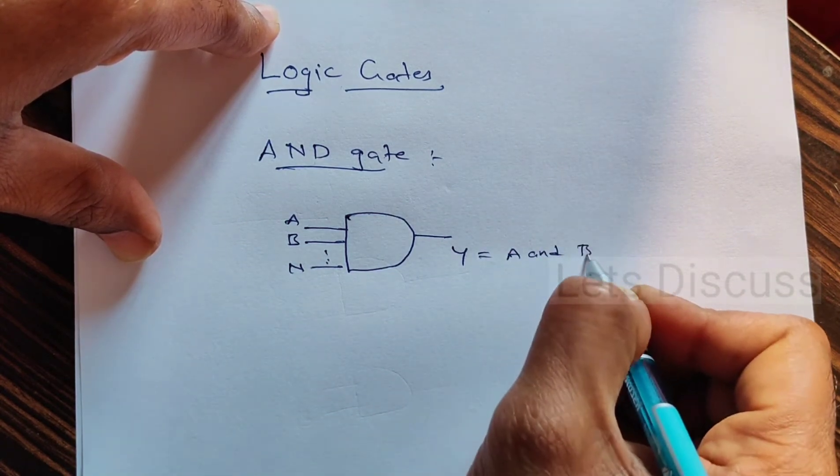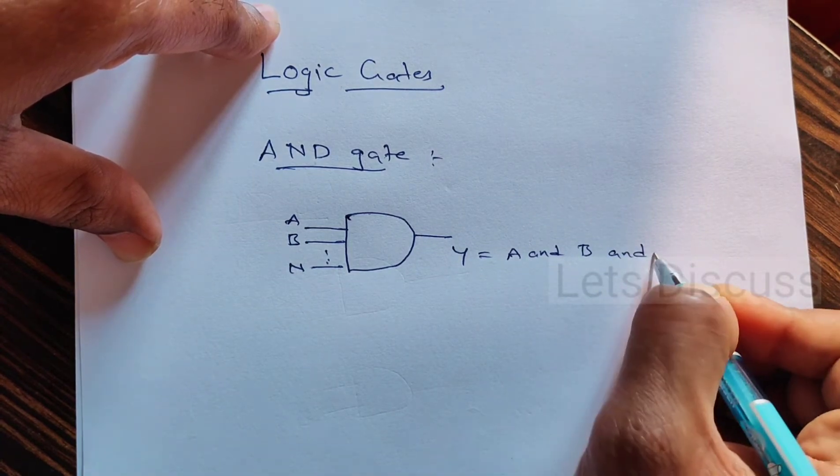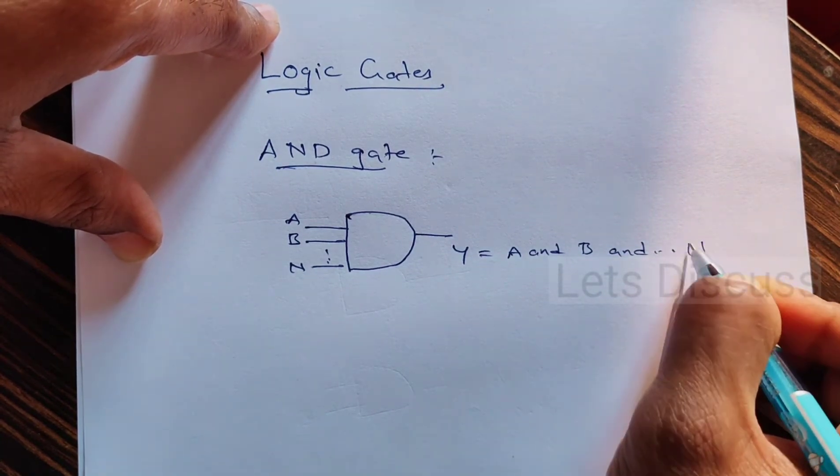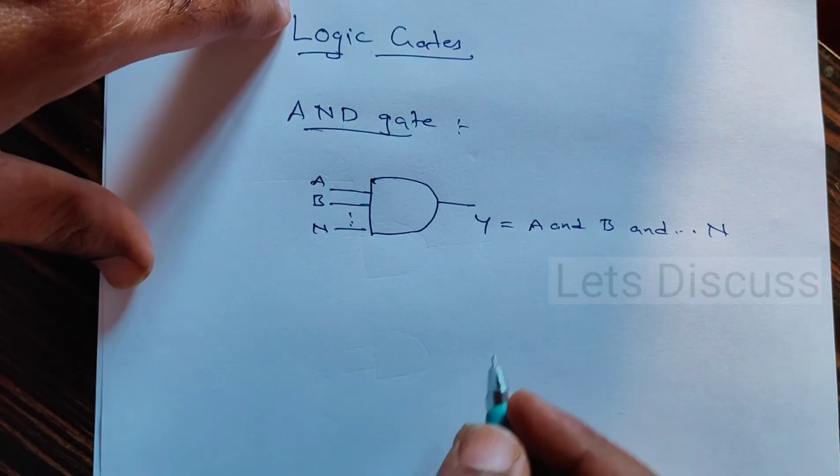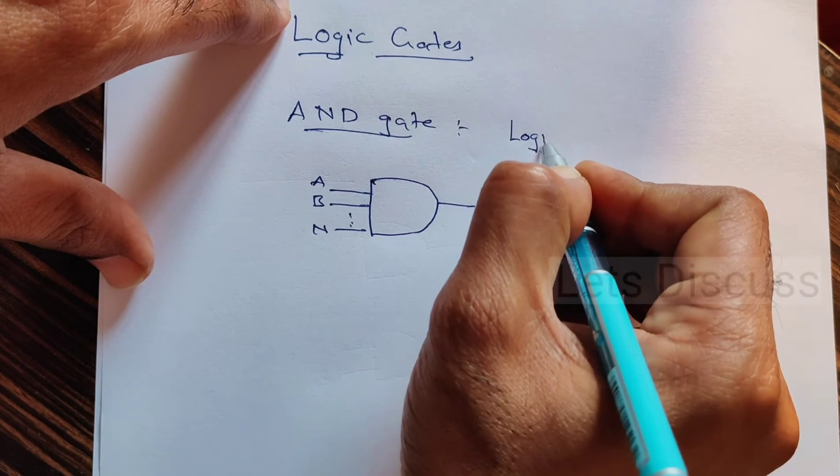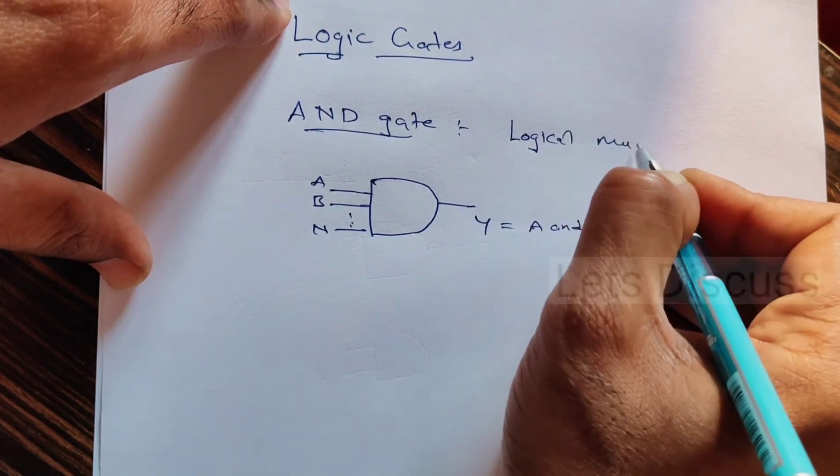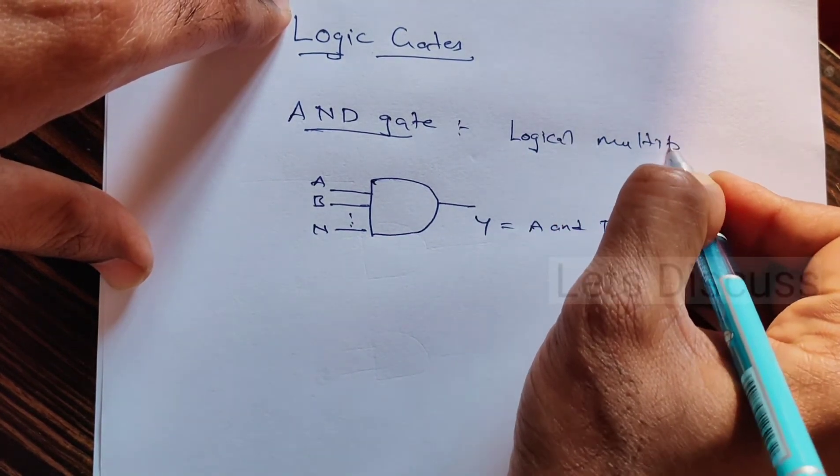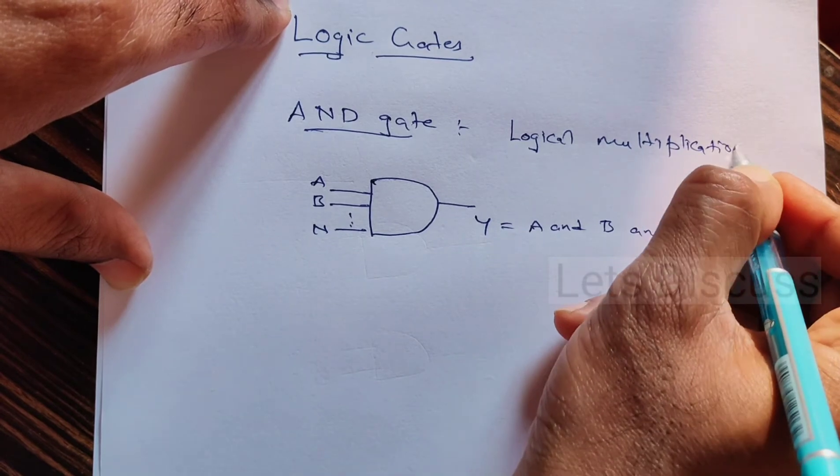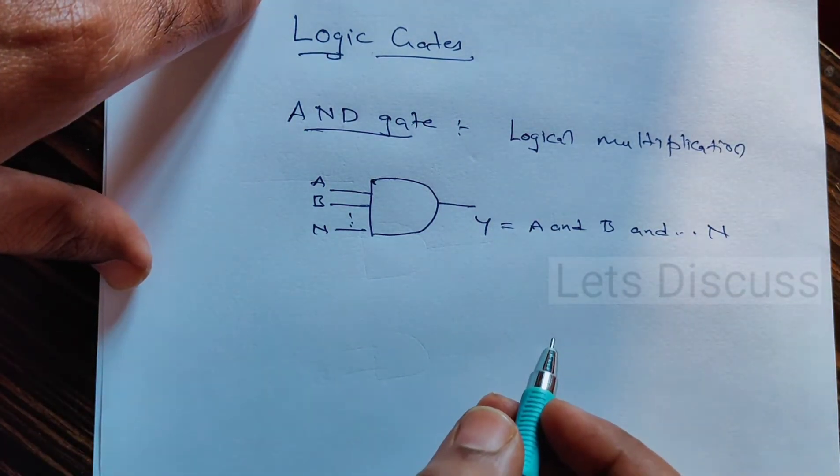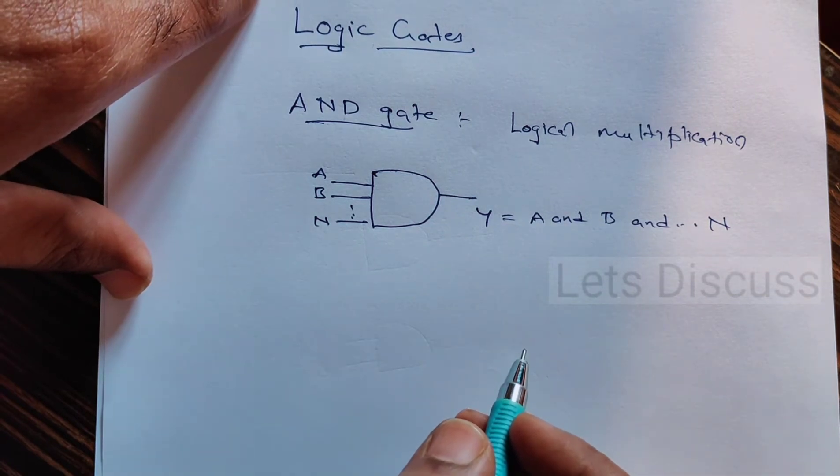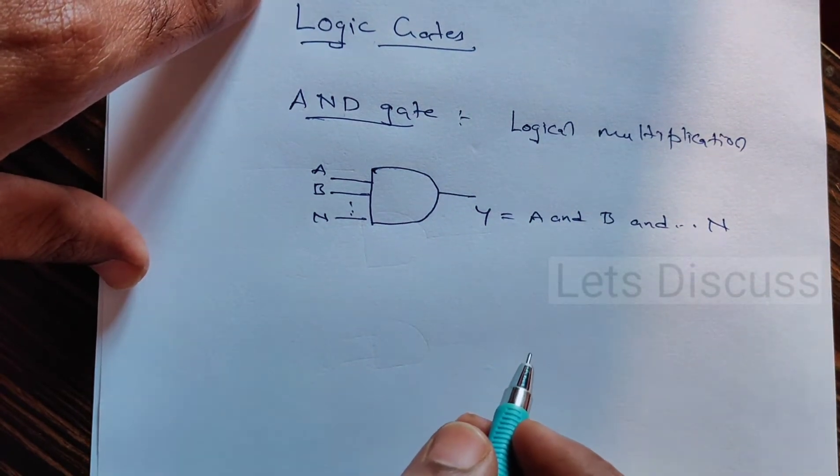B and so on to N. The AND gate performs logical multiplication. It is not like regular multiplication, it is logical multiplication. Let us see what is logical multiplication in the truth table.